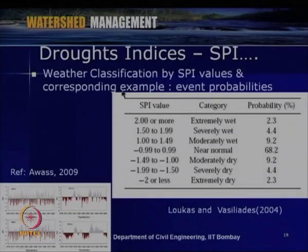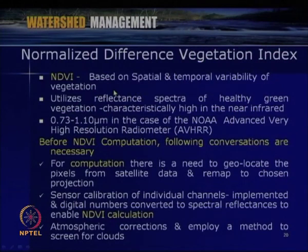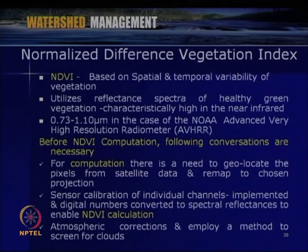That is about the SPI or standardized precipitation index — one of the most commonly used drought analysis indices. Another type of index that can be used is the normalized difference vegetation index (NDVI). Remote sensing is a commonly used tool to identify land use and land cover patterns for a given watershed, and through remote sensing we can derive the NDVI for a given area.